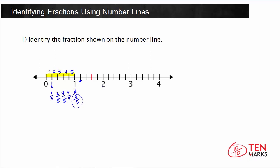Starting at 0 and counting up, adding 1 to the numerator at each division: at whole number 1, we're at the 5th division. Continuing on — 6, 7, 8, 9, 10 — whole number 2 is 10 fifths, because the numerator is 10 and the denominator is still 5 since each whole is divided into 5 equal parts. Continuing further, whole number 3 would be 15 fifths, and whole number 4 would be 20 fifths.